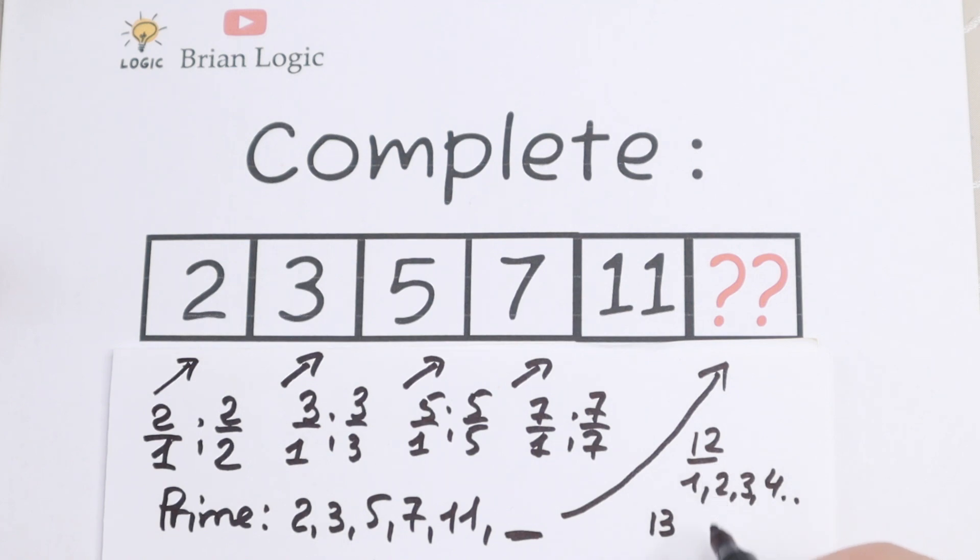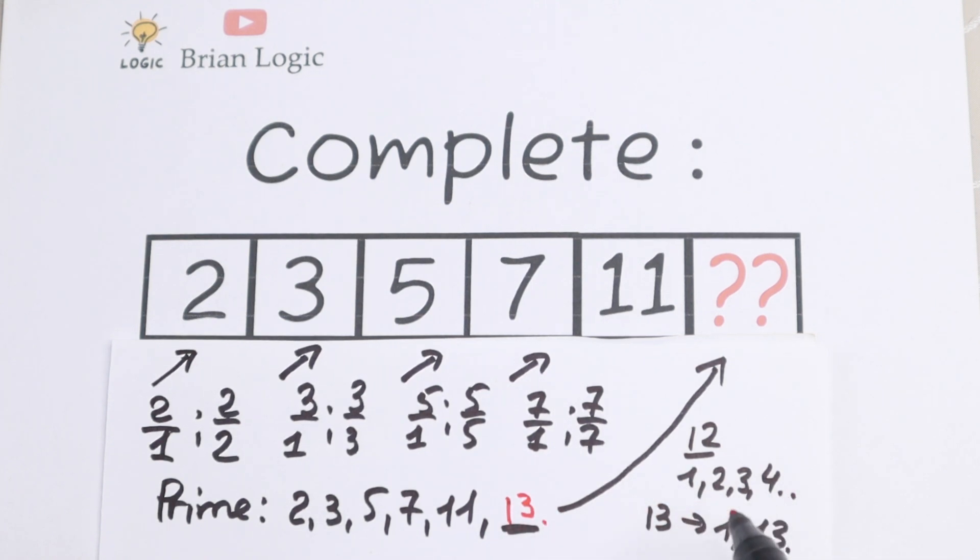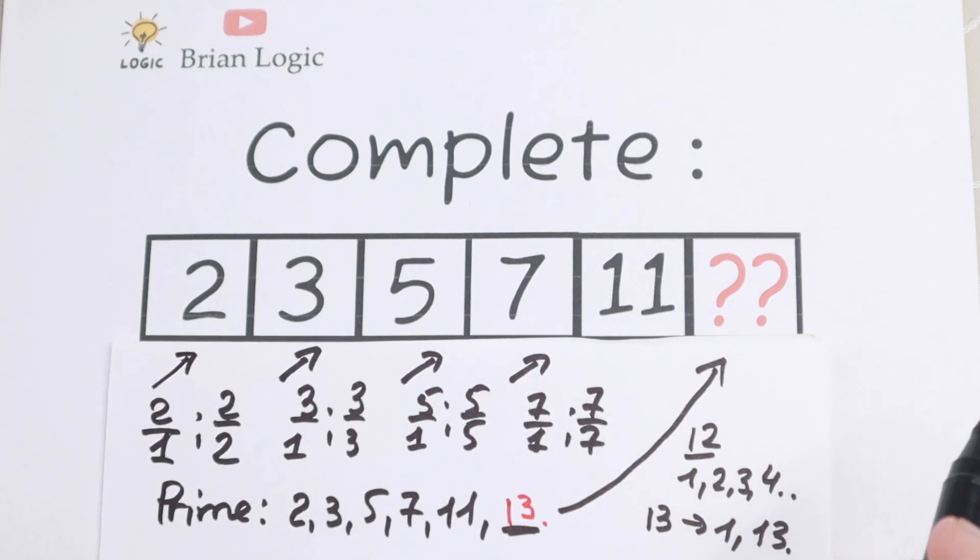And what about 13? It's really good because this 13 can be divided by 1 and 13 only. So our next number is 13 because this is a numeric series with the prime numbers.